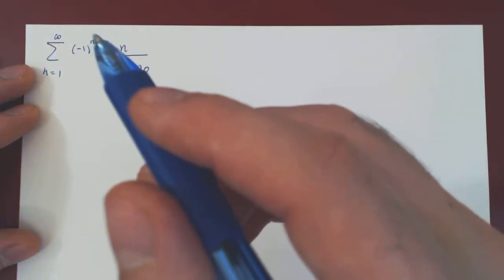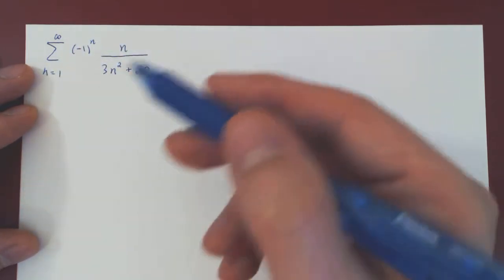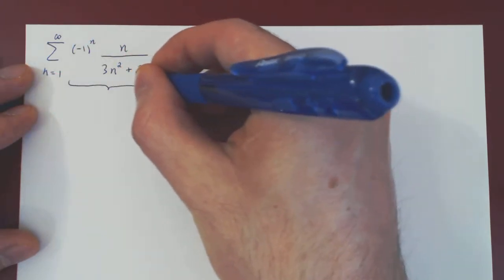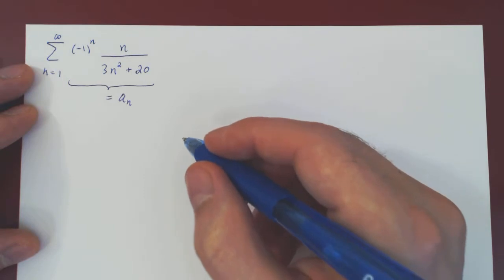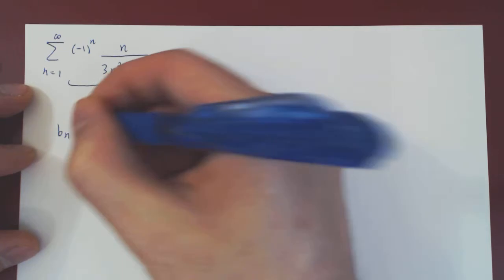Okay, so in this video we will determine whether the series converges or diverges using the alternating series test. We're summing the terms of the given sequence, and when we want to apply the alternating series test, we simply have to look at the positive part of our sequence, ignoring the term that gives the alternation.